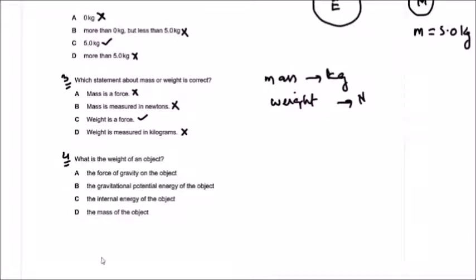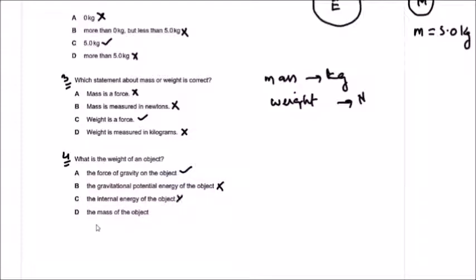Question number four: What is the weight of an object? Recall the definition of weight — weight is the gravitational force that acts on an object. Option A — the force of gravity on the object — that's correct. Check the others: gravitational potential energy — no. Internal energy — no. The mass of an object — not correct. The answer is the force of gravity on the object.